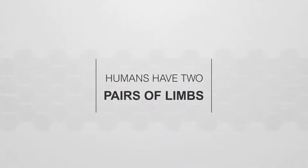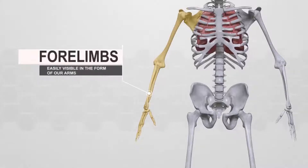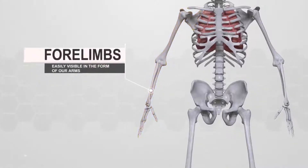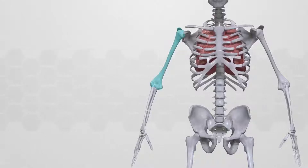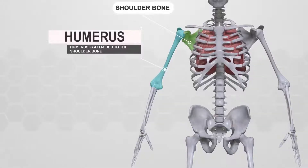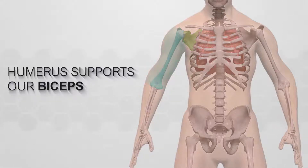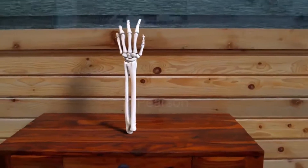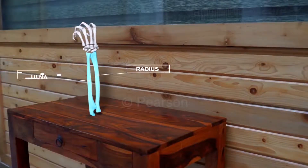Humans have two pairs of limbs: forelimbs, easily visible in the form of our arms, and hind limbs, easily visible in the form of our legs. The upper part of the forelimb is called the humerus. Humerus is attached to the shoulder bone, part of the vertebral column, and supports our biceps. The lower part of the forelimb comprises of two long bones, radius and ulna.